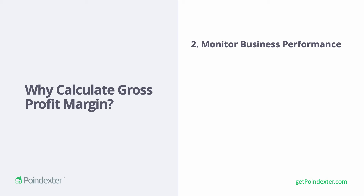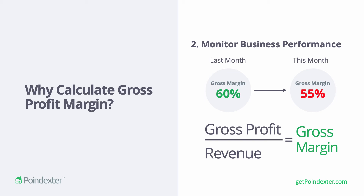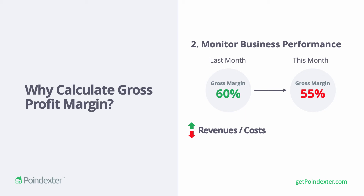The second scenario where gross profit margin is useful is monitoring business performance over a time horizon. The cool thing about gross profit margin is that it contains information about multiple variables within a single number, providing more insight at a glance. For example, say last month we had a gross margin of 60% and this month it's 55% — gross margin went down. To deconstruct what this means, we go back to the formula: gross profit divided by revenue, where gross profit equals revenue minus costs. If anything happens to gross margin, it's one of these two variables — revenues or costs — that is affecting the outcome.